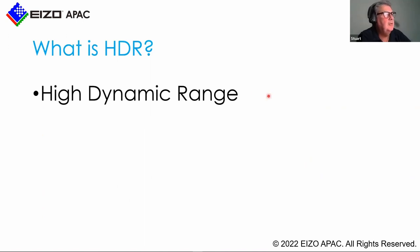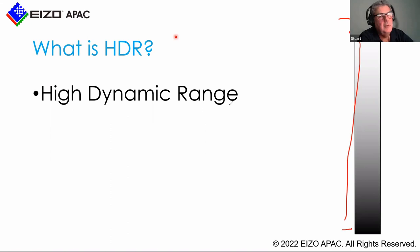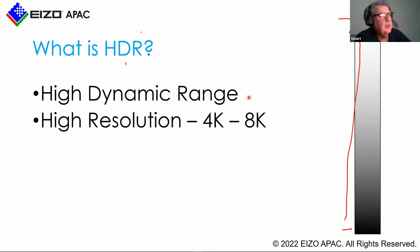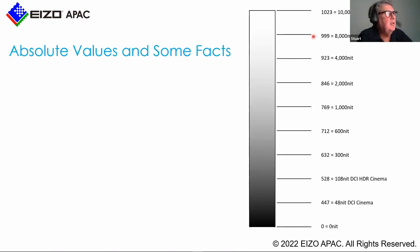HDR means High Dynamic Range — and it doesn't mean high brightness. It means we're looking at the total dynamic range from black to white, much higher than Rec.709. So it's not just about high brightness. Resolution is 4K to 8K, and it operates with wide gamut using Rec.2020, with P3 being the minimum standard.